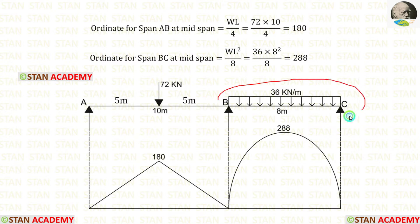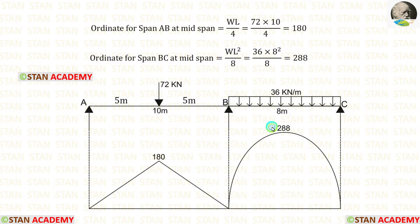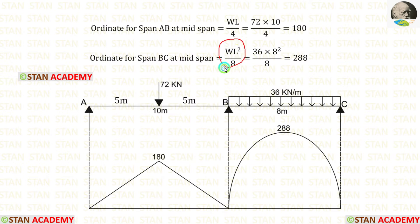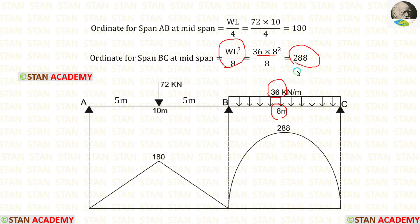Now let us consider the span BC. In span BC, UDL is acting for the full span. Here also, the maximum bending moment occurs at the center. The formula to calculate the maximum bending moment is WL² by 8. Here, W is 36 and L is 8. We can apply in the formula and finally we are getting 288.